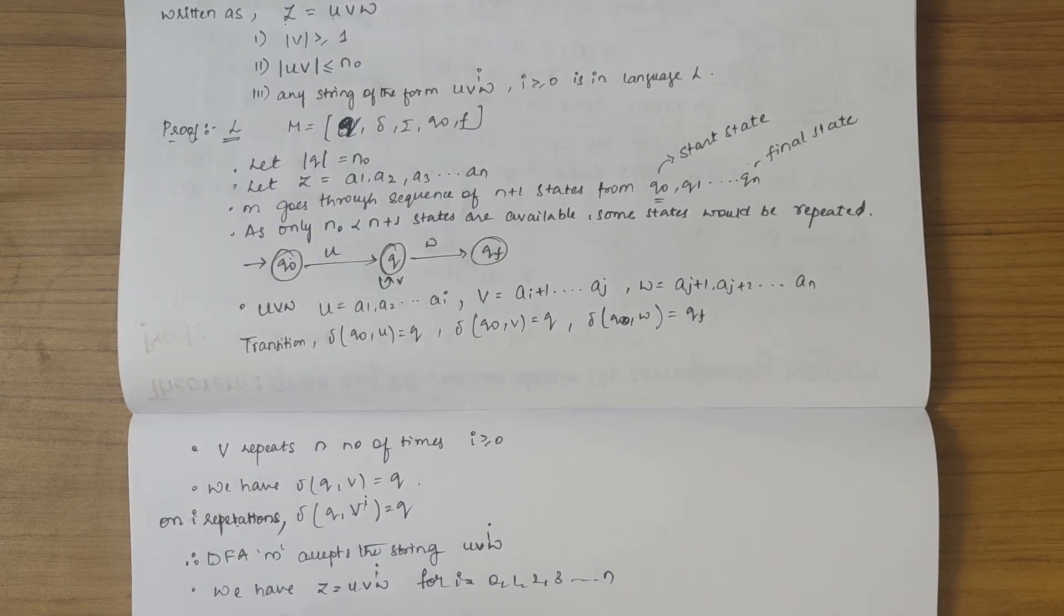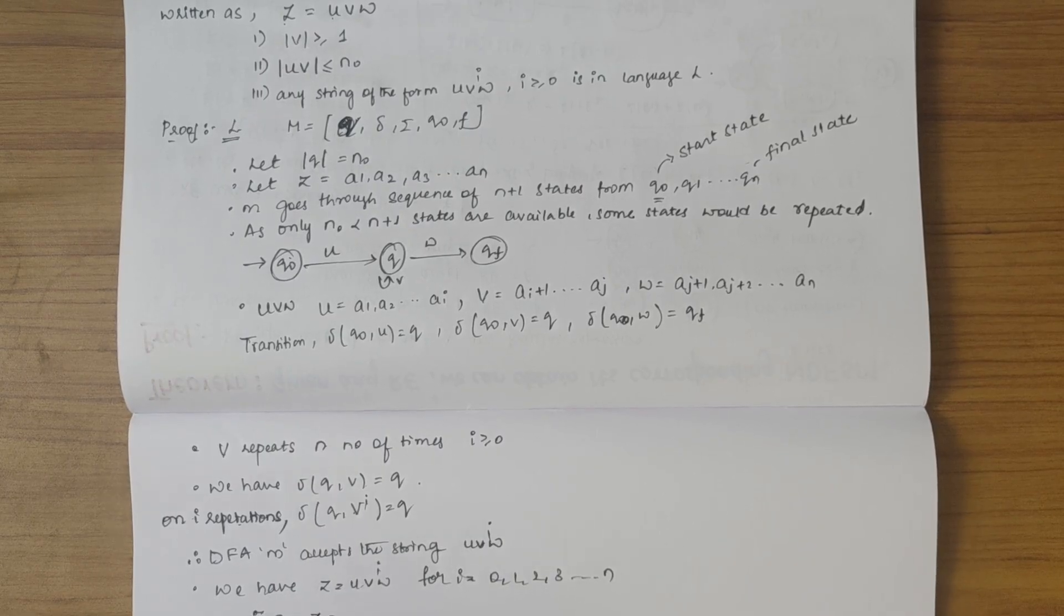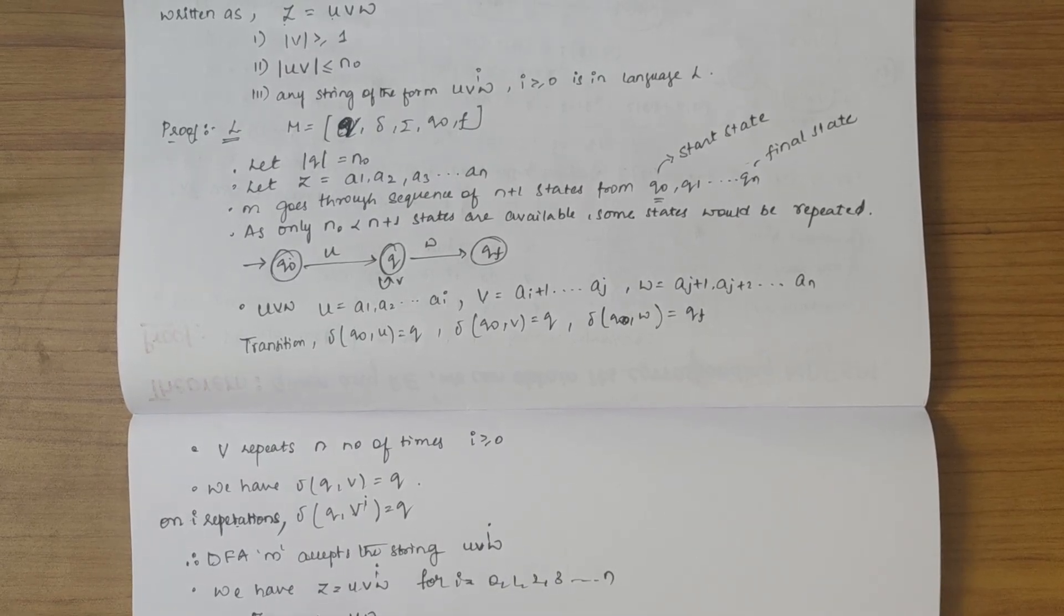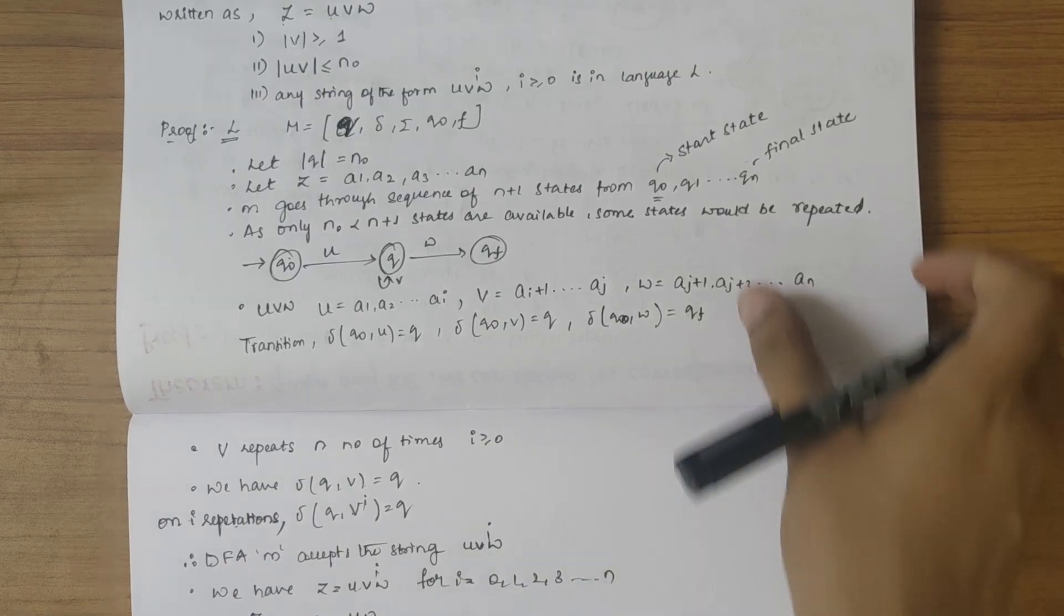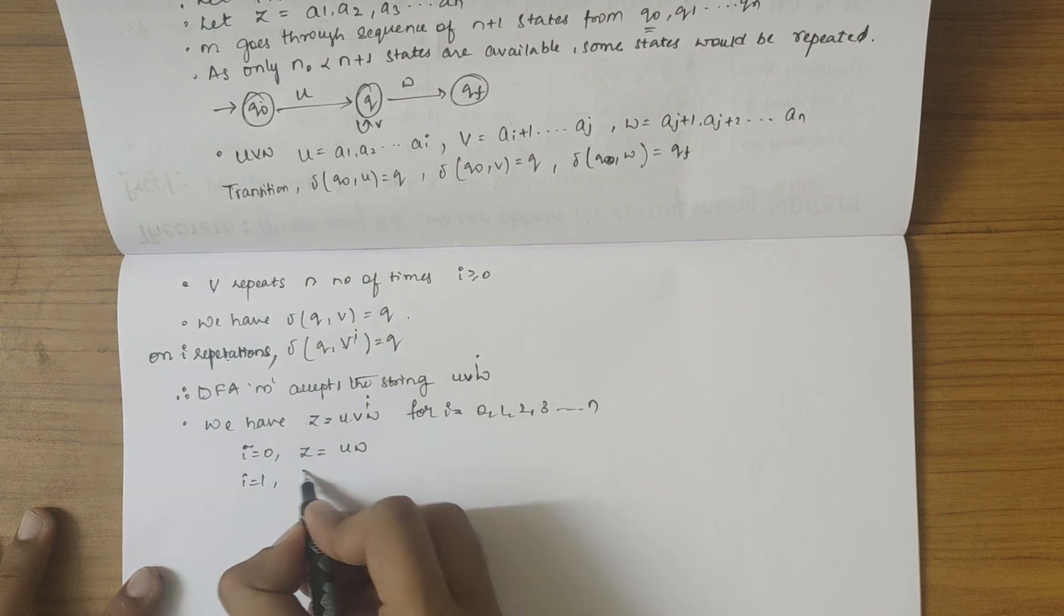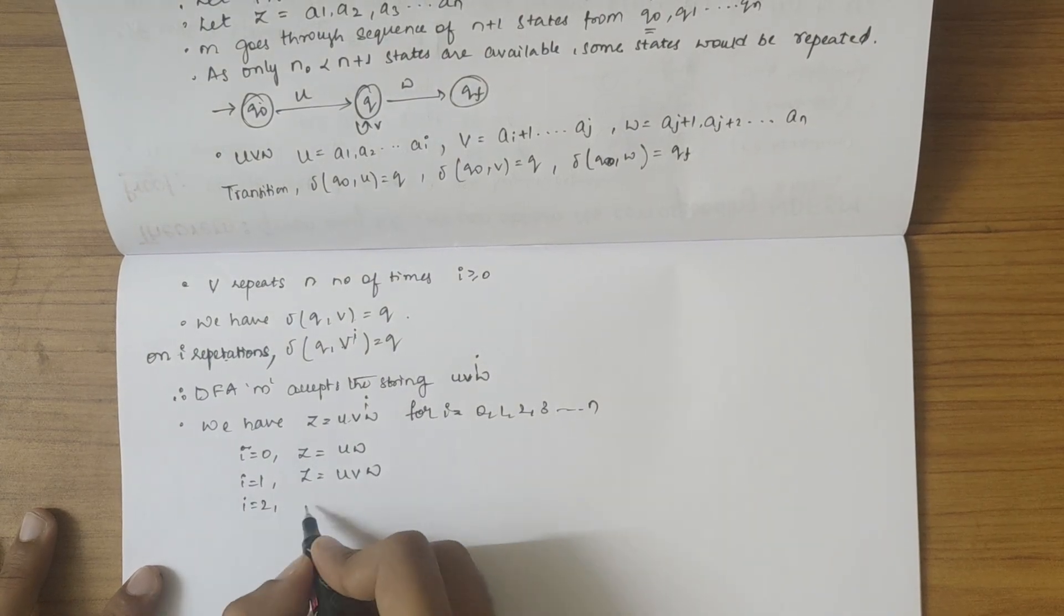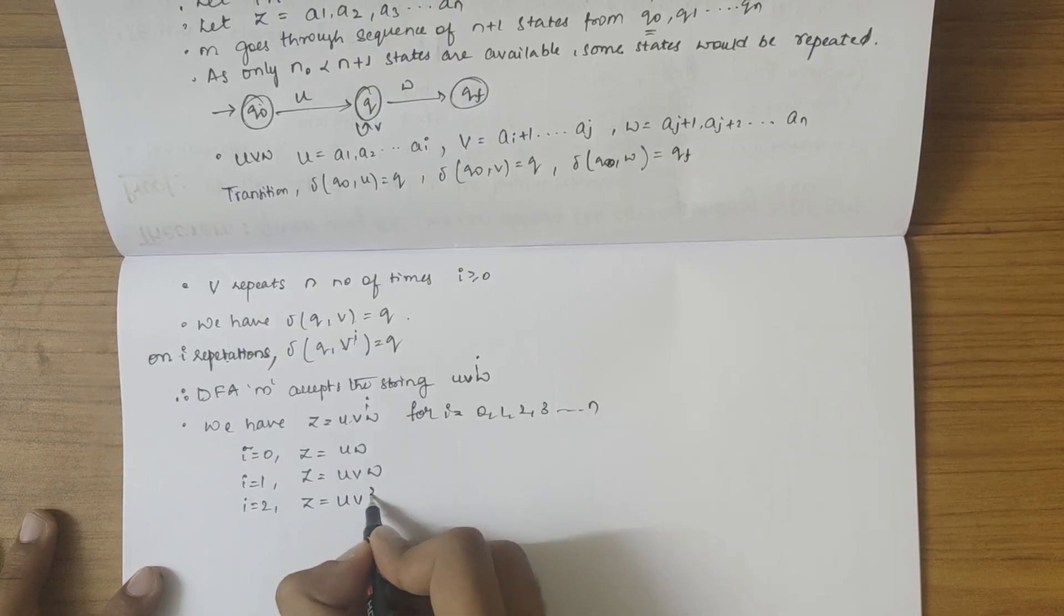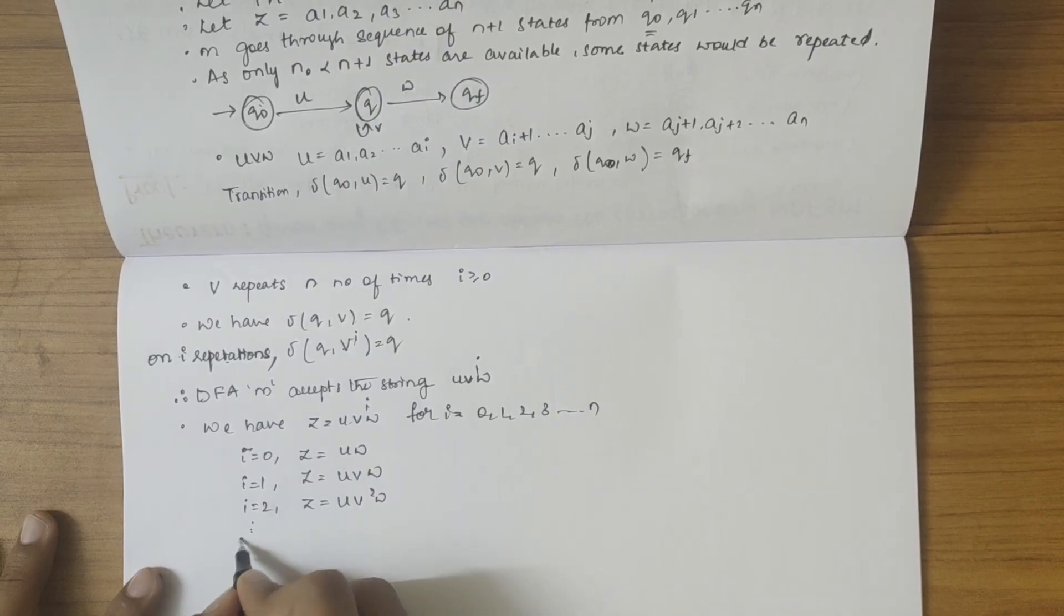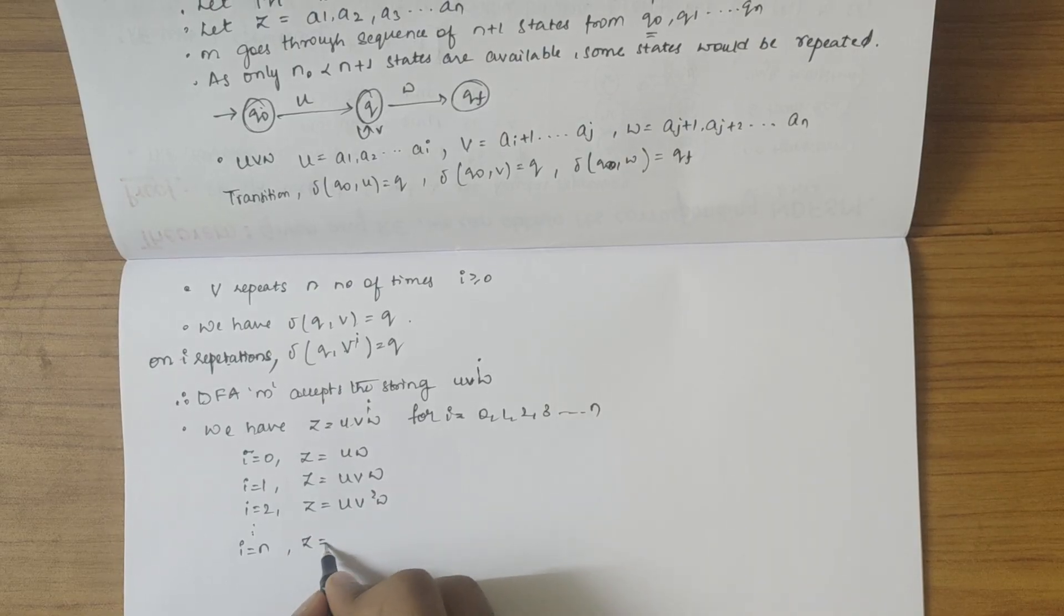When i is equal to 2 we get z is equal to u v square w. When i is equal to n we get z is equal to u v power n w.